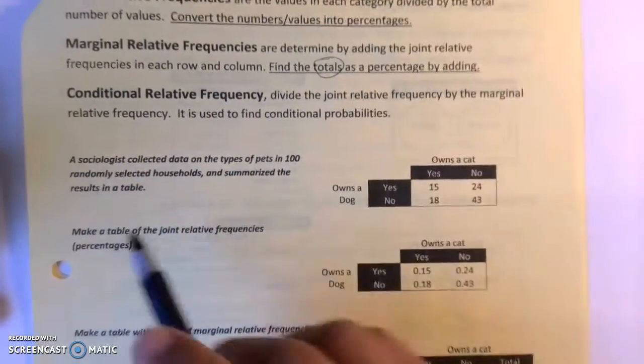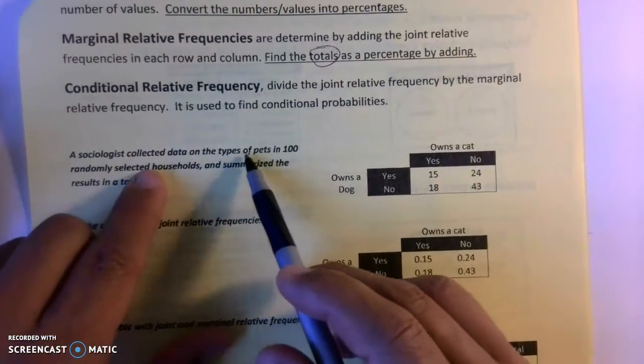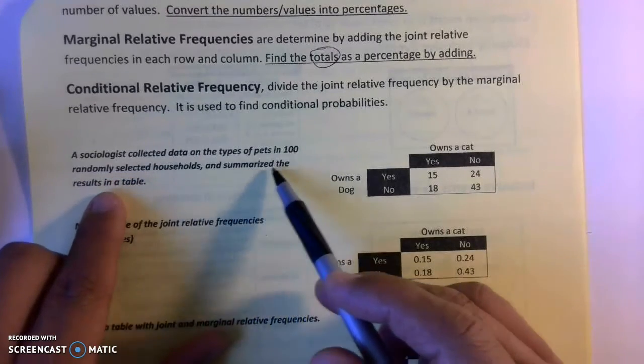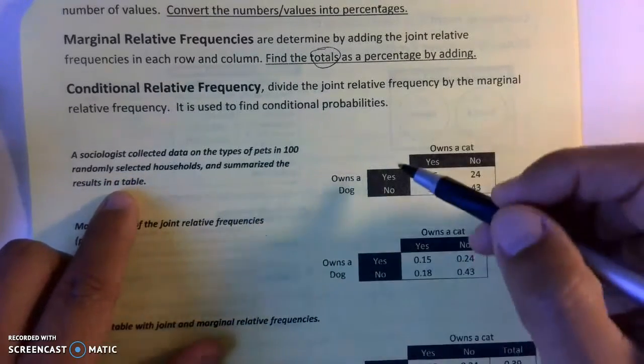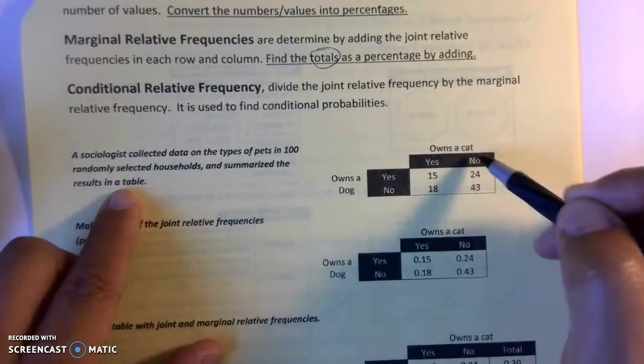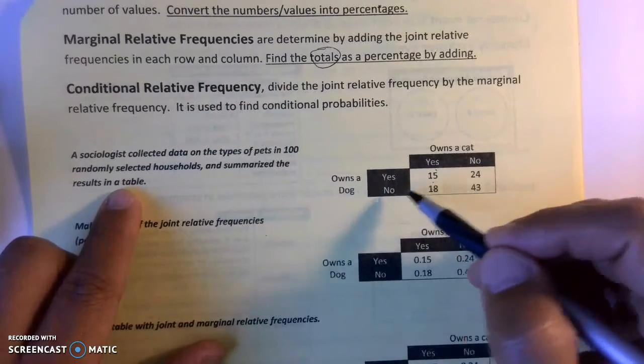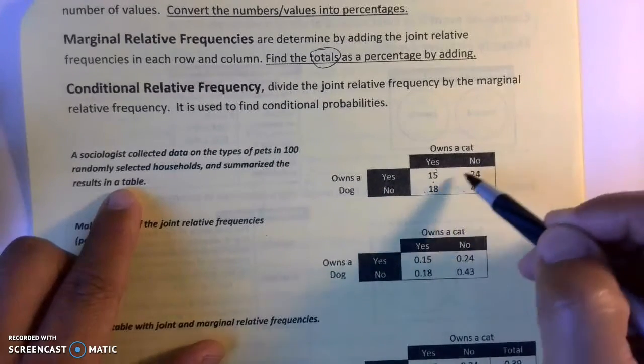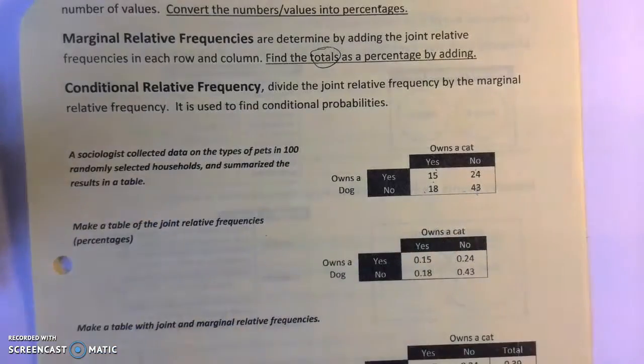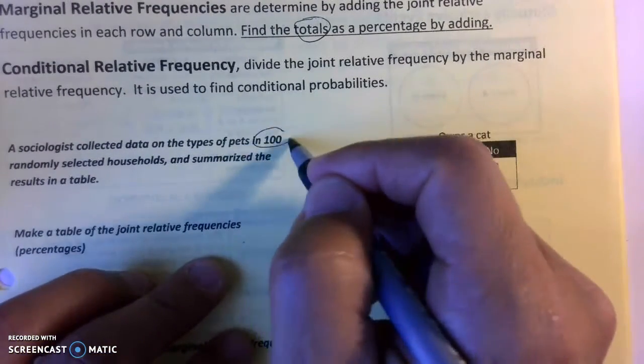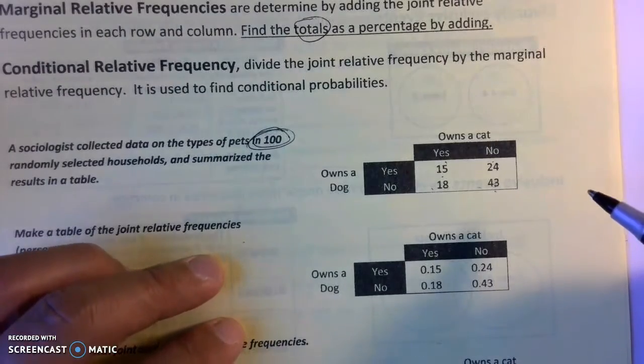A lot of this is already filled out for you. Sociologists collected data on the types of pets in 100 randomly selected households and summarized the results in this table. There are people who own cats (yes or no), people who own a dog (yes or no). Some own both, some own only one, and some don't own anything. This particular chart has exactly 100 people.